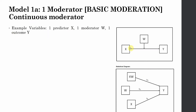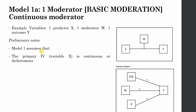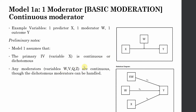If your interaction is significant, then there is moderation that is further probed. Model 1 assumes your primary IV (X) is continuous — though it can be dichotomous as well. The moderator W is continuous for this example, though it can also be dichotomous.